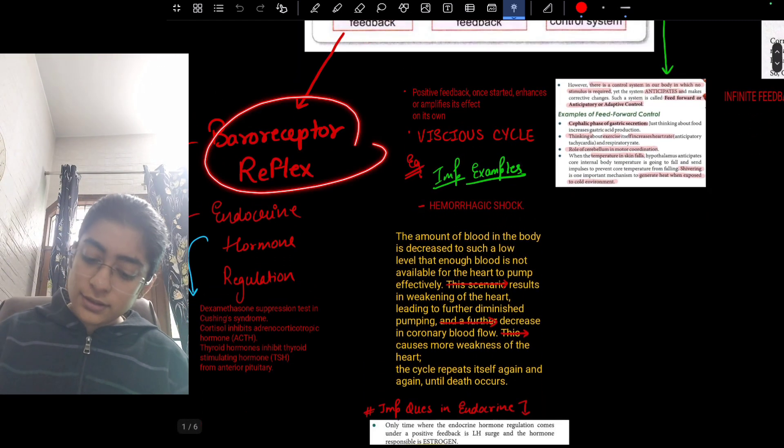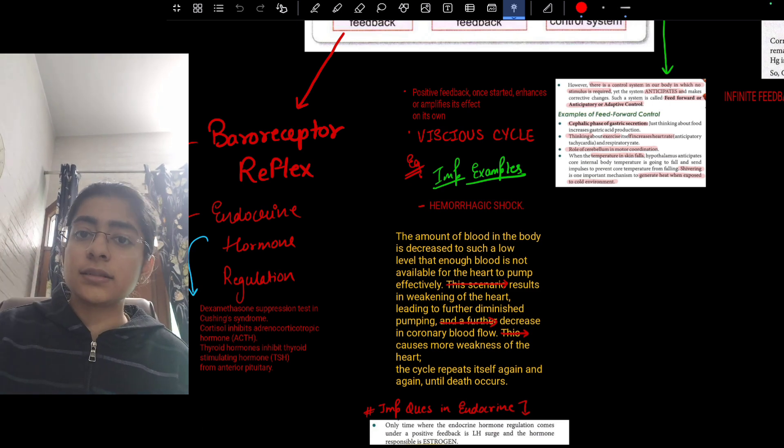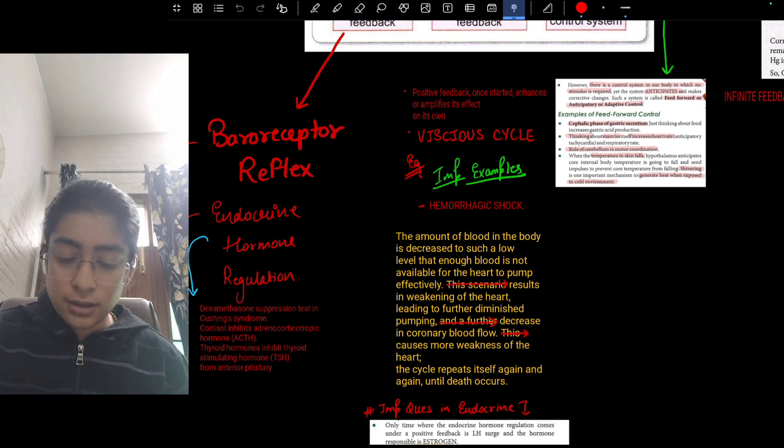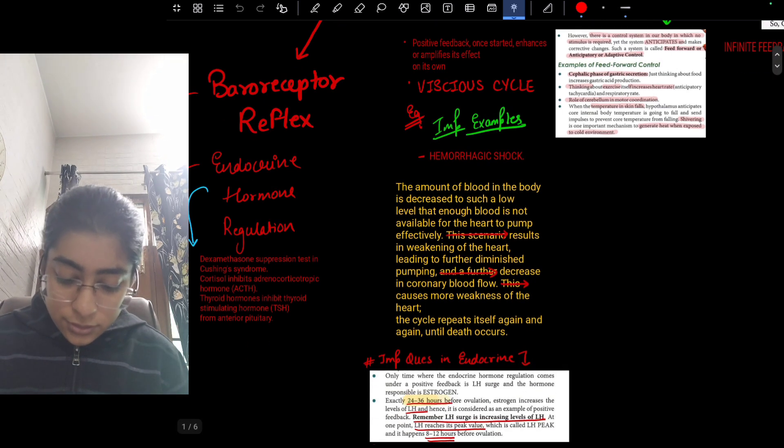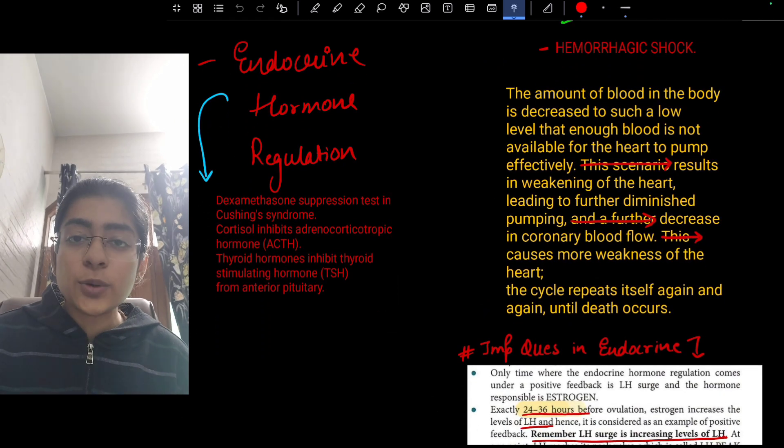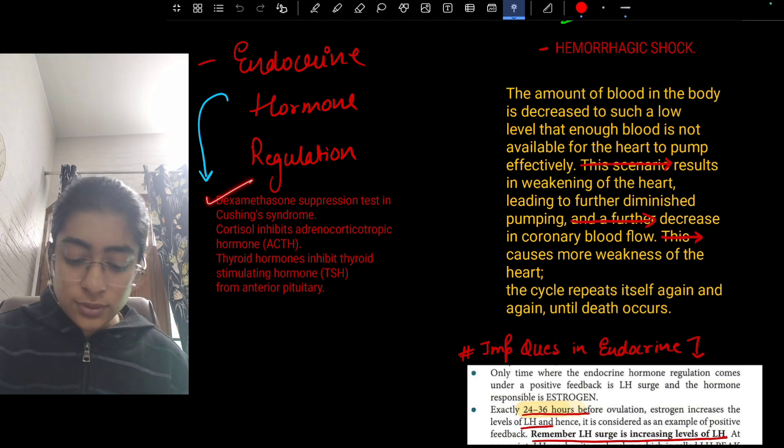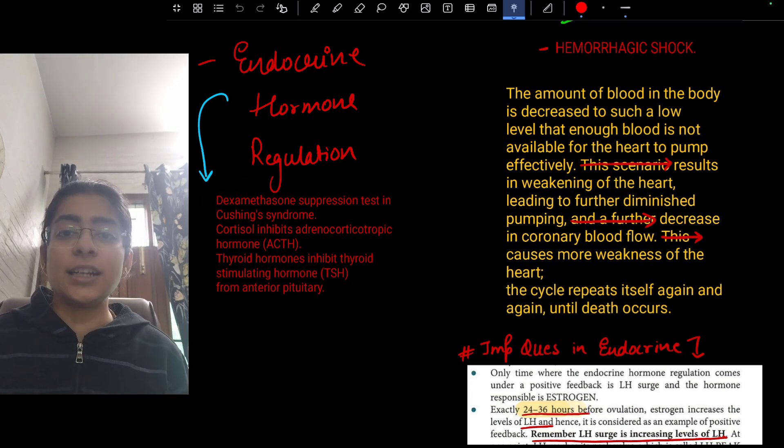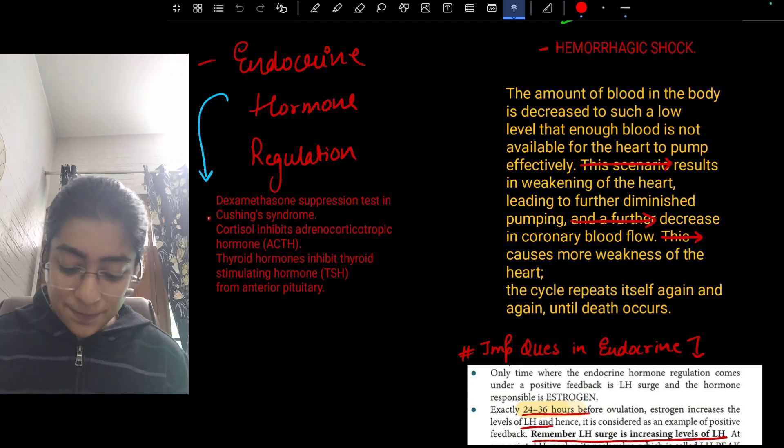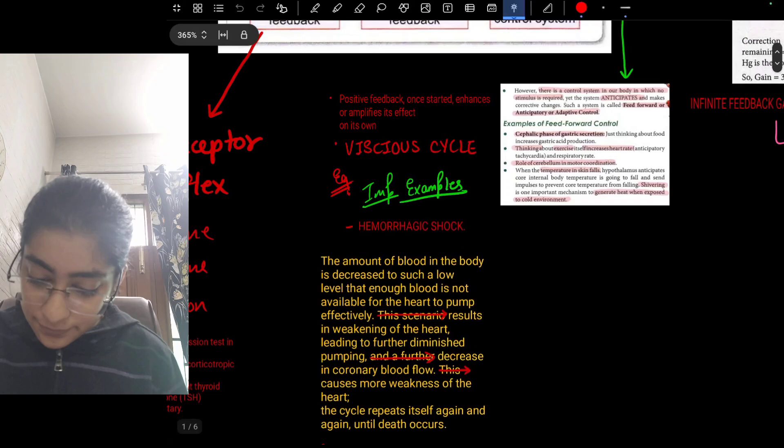In negative feedback, we are having the baroreceptor reflex. If there is increased BP, then we will have reflex to lower the BP by our physiological mechanisms. Endocrine hormone regulation: these are some extra information. If you write you have an edge. Dexamethasone suppression test DST is done in pharma. If you write here it will be more presentable. Cushing syndrome: cortisol inhibits the ACTH. Thyroid hormone inhibits the TSH from anterior pituitary.